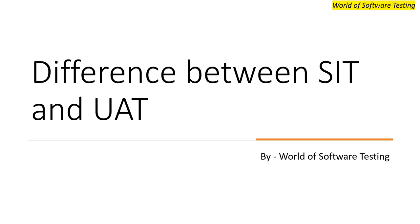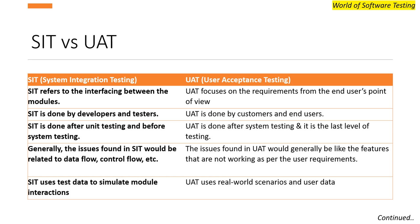Let's start with the difference between SIT and UAT. System integration testing refers to the interaction or interfacing between different modules. UAT focuses on requirements from the end user's point of view — it is basically performed from the end user's perspective.